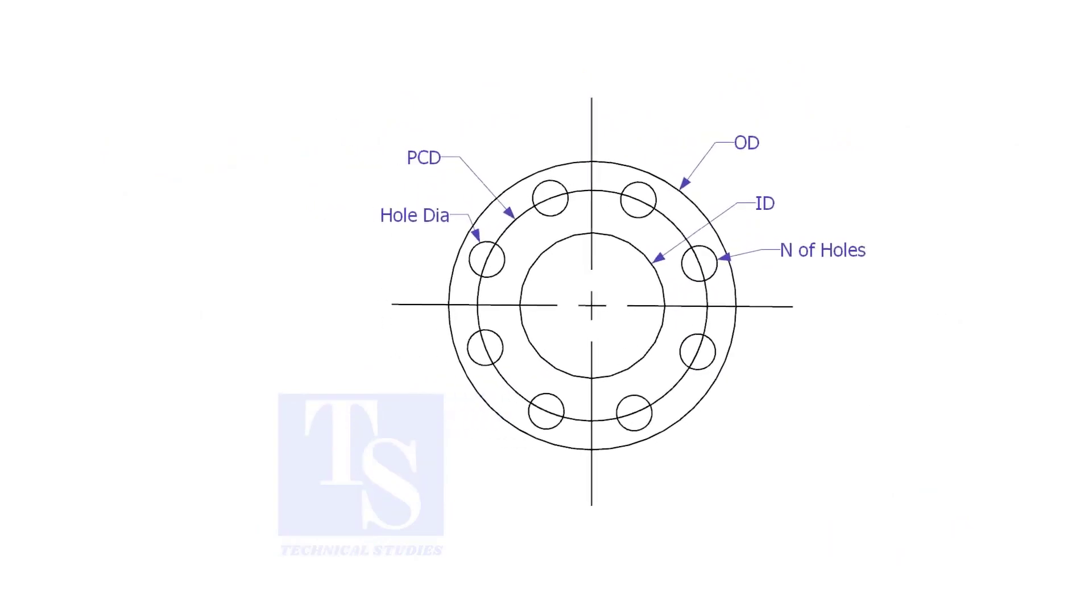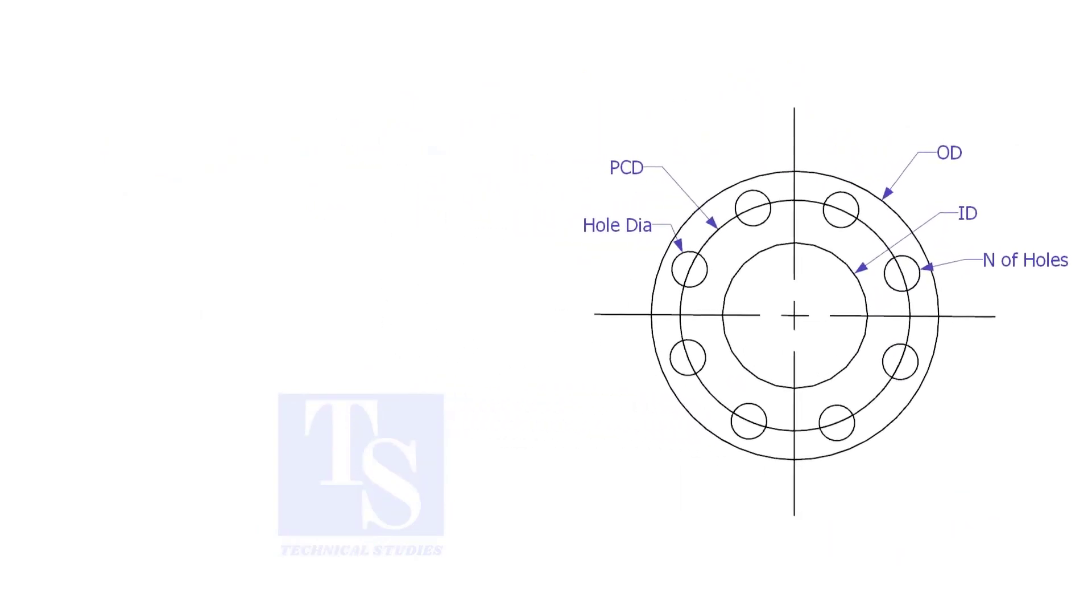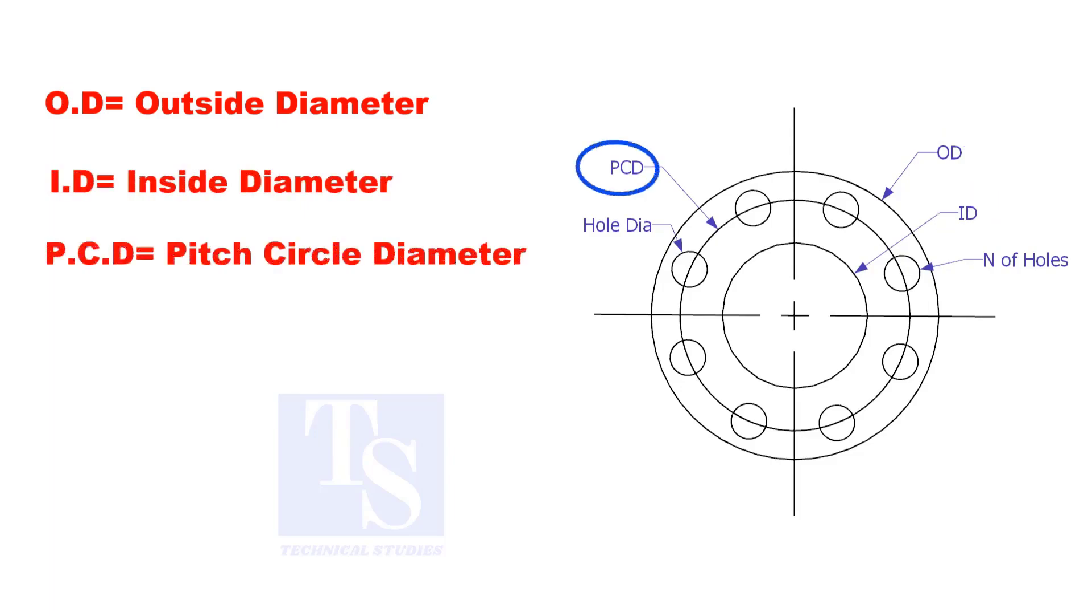To make a plate flange, we need to know the following things: OD, the outside diameter; ID, the inside diameter; PCD, the pitch circle diameter; number of holes; and the hole size.